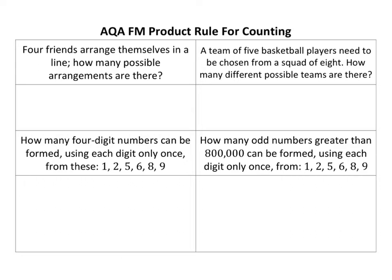Four friends can arrange themselves in a line — so how many possible arrangements are there? For the first position there are four choices, the next position three choices, then two, then one. That's known as four factorial, and you end up with 24. So there are 24 different arrangements that could be made with those four friends.